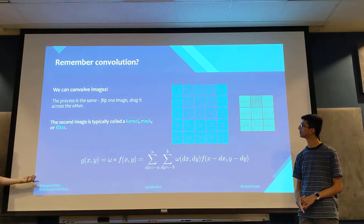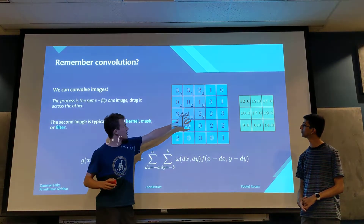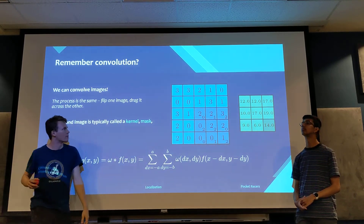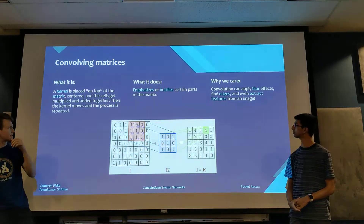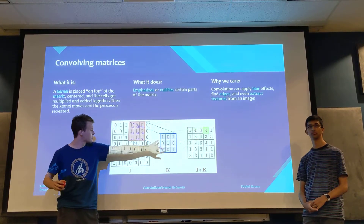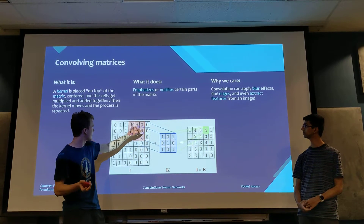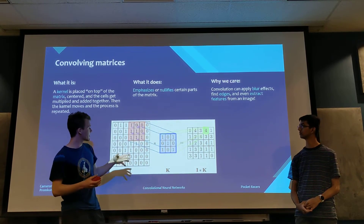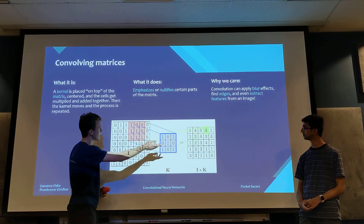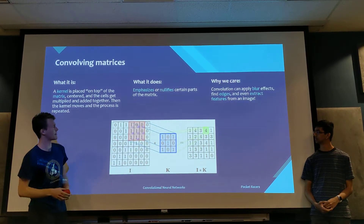The best way to think about it is that you're just taking the kernel, flipping it, and dragging it across the image. You align it with, say, the top part, and multiply each number in the kernel to get the output at that one point. This kernel's already been flipped, so we just align each term and multiply them together, then sum to get the output. We take 1 times 1 equals 1, then get 0, 1, 1, and 1. Add them together and we get four.